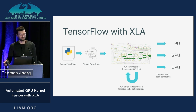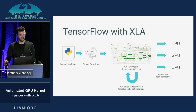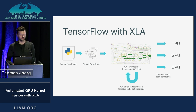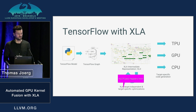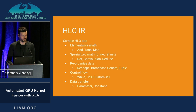XLA's IR is called HLO, which stands for High-Level Optimizer IR, to distinguish it from more low-level IRs like LLVM IR that we use for code generation. On the HLO, a number of compiler passes are performed — some target-independent, some target-specific. On the optimized HLO, we lower this to LLVM IR, and in the case of the GPU backend, we use the NVPTX backend to produce the code that runs on the accelerator. Parts of the fusion logic happen here, and this is what I'm going to talk about next.